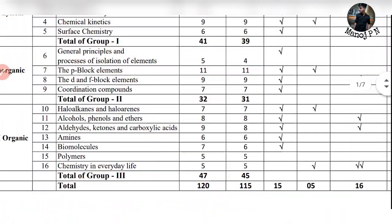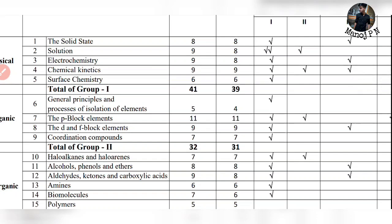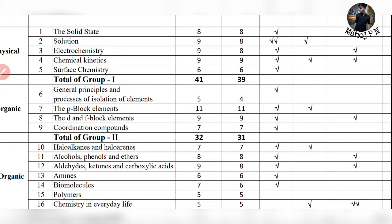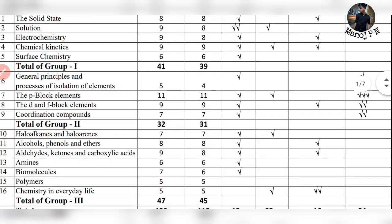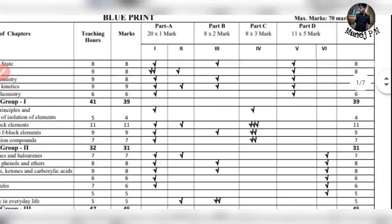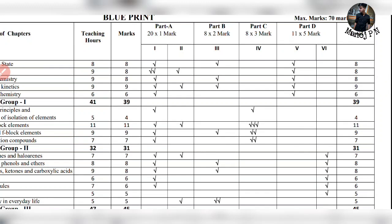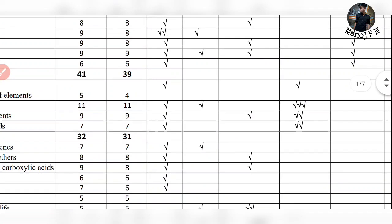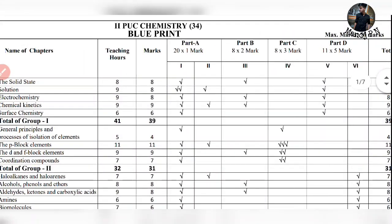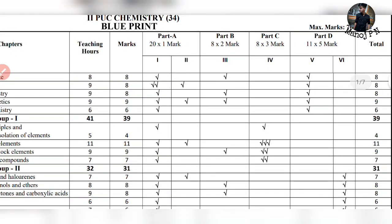Inorganic chemistry — again 1, 2, 3, 4 chapters here. General principles and process of isolation of elements is a very important chapter. That's a small mark. The next is P-block elements — it's not a small chapter. And then D and F-block. And then coordination components. General principles and process of isolation of elements — you get 4 marks. Basically you ask 4 marks, this chapter is very important. In the P-block, it's not D and F, it's not the coordination, it's not the P-block — even you need to study all.